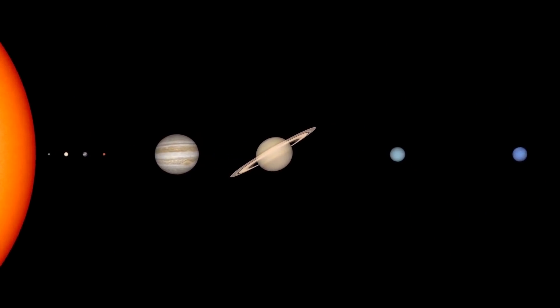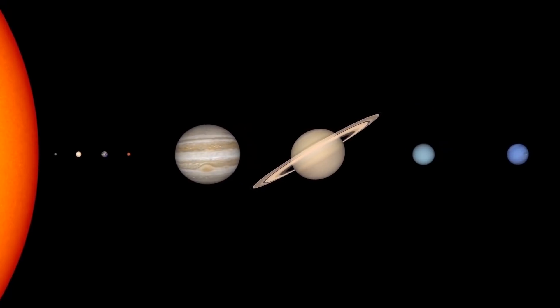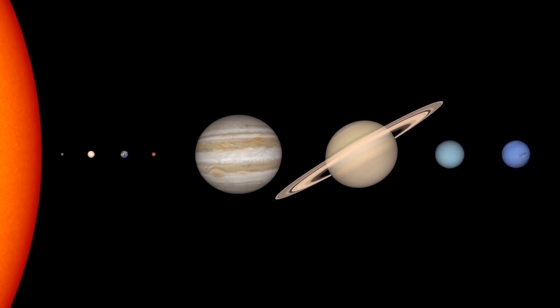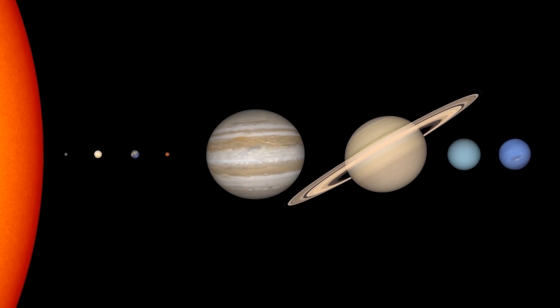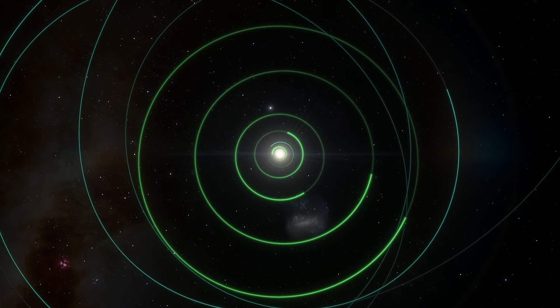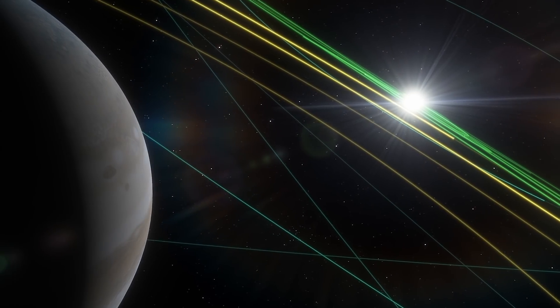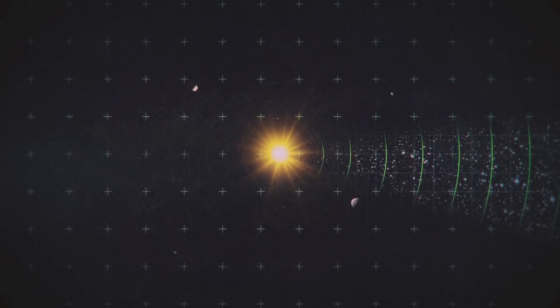If our solar system were typical, Jupiter, Saturn, Uranus, and Neptune would be way closer to each other, and the Sun, than they are. What's the reason behind this anomaly? Many astronomers say that we just don't have complete maps of other star systems. And that's it.